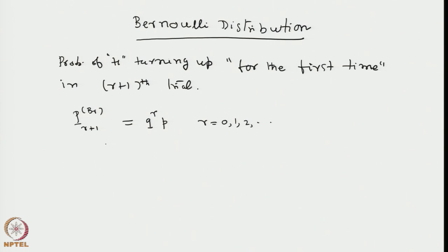It is also called geometric distribution because the successive probabilities for r equal to 0, 1, 2, and so on follow constant ratios like a geometric progression.